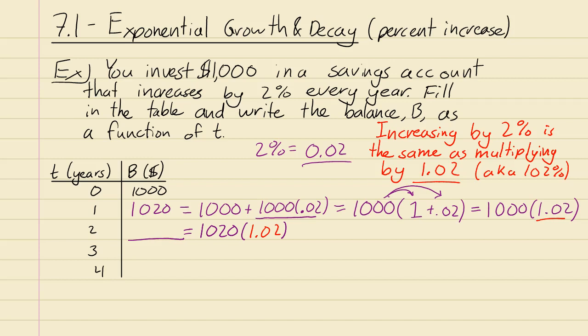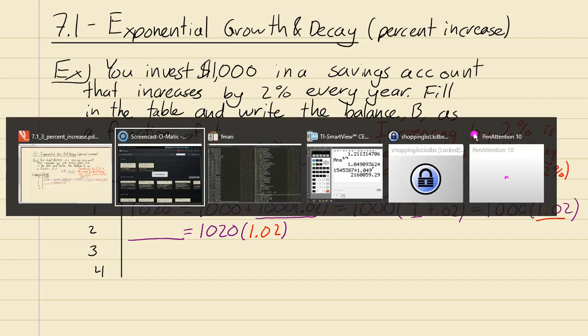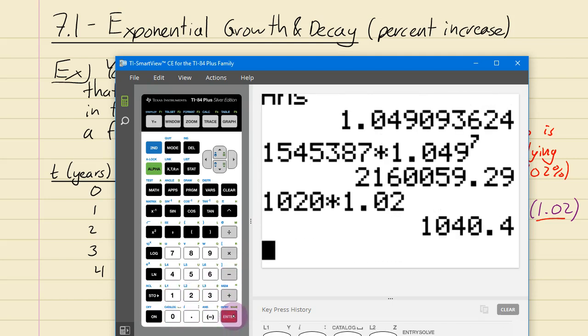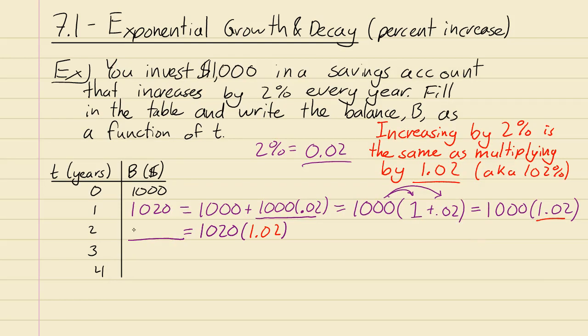So you could just multiply that way with a calculator. And you'll get 1,040.4 which by the way is the name of the tax form you have to fill out whenever you have any kind of income. So that's that.